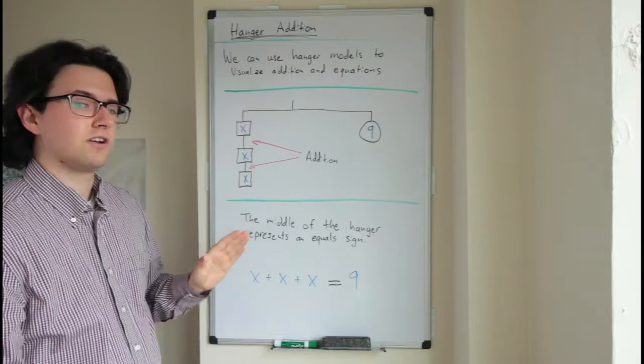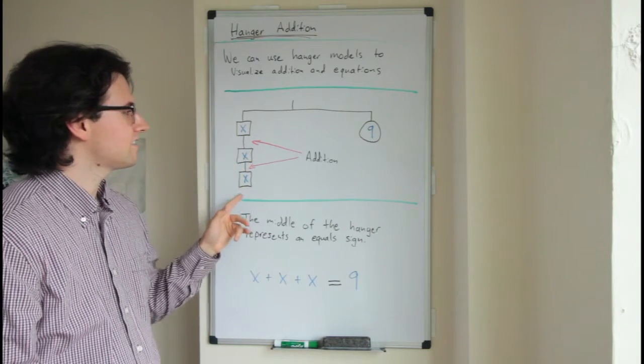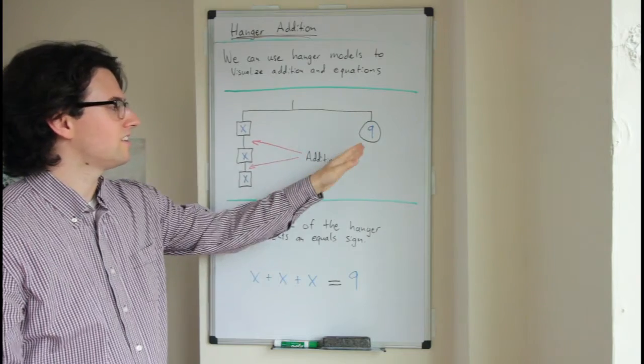We have this midpoint here of the hanger, which represents an equal sign. So these x's added together equals this value of nine.